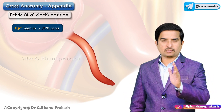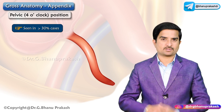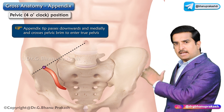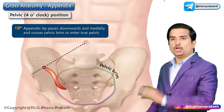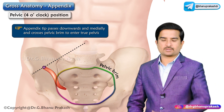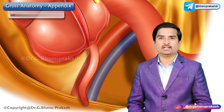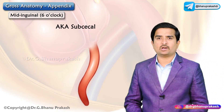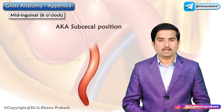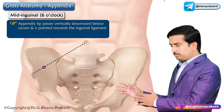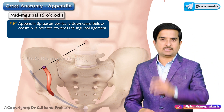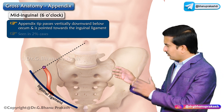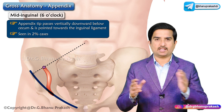The fifth is the pelvic position, or 4 o'clock position, the second commonest, present in greater than 30% of cases. Here the appendix tip passes downwards and medially, crossing the pelvic brim to enter the true pelvis. The sixth is the mid-inguinal position, also called the subcecal position or 6 o'clock position, where the appendix tip passes vertically downwards below the cecum, pointed towards the inguinal ligament, seen in approximately 2% of cases.